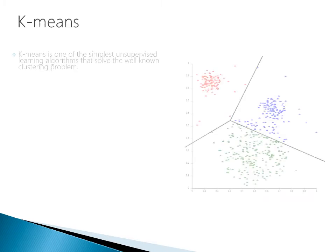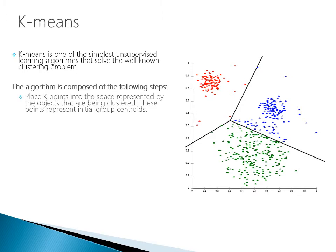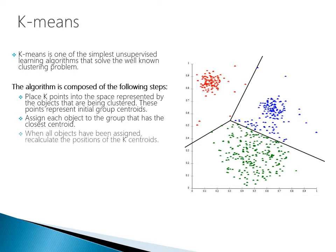I'd like to talk about one specific clustering algorithm called the k-means cluster. It is one of the simplest unsupervised learning algorithms that solves the well-known clustering problem. When working with clustering, k-means will most certainly be one of your go-to tools. The algorithm works as follows: place K points into the space represented by the objects being clustered — these points represent the initial group centroids. Assign each object to the group with the closest centroid. When all objects have been assigned, recalculate the positions of the K centroids. Repeat steps 2 and 3 until the centroids no longer move.